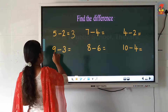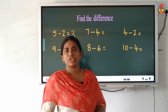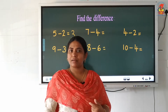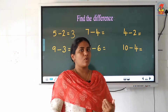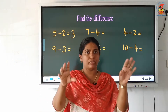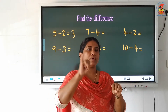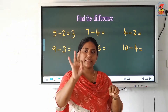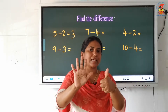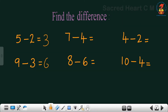Now look at the next question: 9 minus 3. Which is the small number? 3 is the small number. We start counting after the small number to the big number. After 3: 4, 5, 6, 7, 8, 9. How many fingers did I raise? 6. So 6 is our answer.